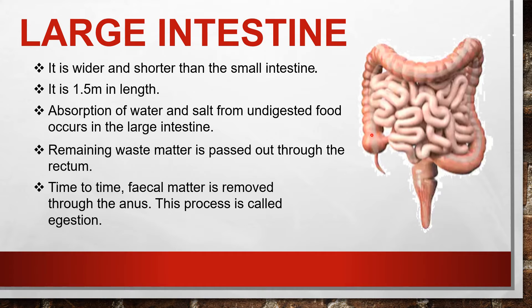The small intestine is 7.5 meters long, while the large intestine is shorter at only 1.5 meters in length. The function of the large intestine is the absorption of water and salts from undigested food.